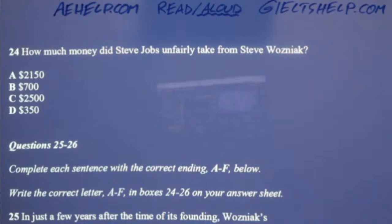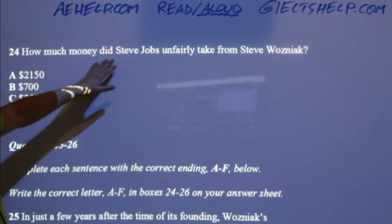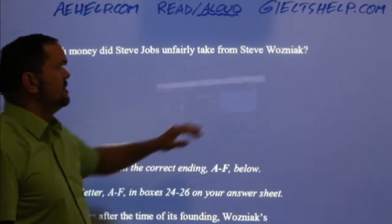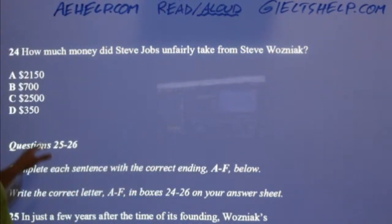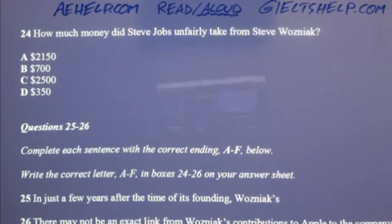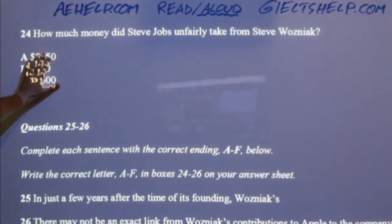Then we have a multiple choice question: Number 24 — how much money did Steve Jobs unfairly take from Steve Wozniak? The choices are $2,150, $700, $2,500, or $350. The choices can confuse you, so just focus on the question. You might want to change this into a statement: 'Steve Jobs cheated Wozniak out of this amount of money.'